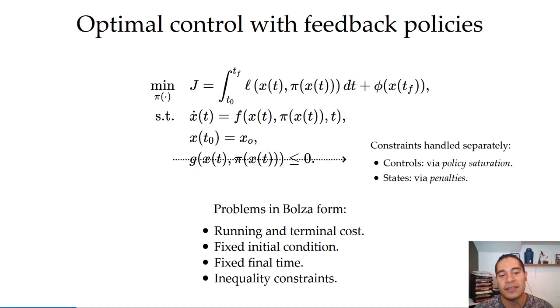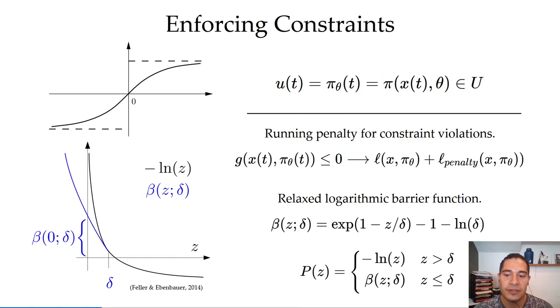Constraints are handled separately to simplify the analysis and to avoid handling the distinction between segments where the constraints are active or inactive. Hard control constraints are enforced through saturation with the last non-linearity of the policy. Soft state constraints are enforced with a relaxed barrier function that is defined outside the feasible region and can converge to the classical interior point barriers by increasing a parameter.